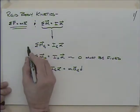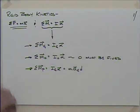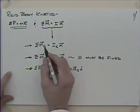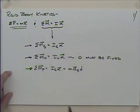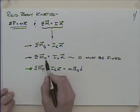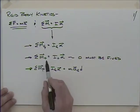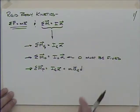We actually have three equations we can use. If you sum the moment about the mass center G, the sum of moments about G equals I about that same mass center times the angular acceleration alpha. Or if you want to sum the moment about a point other than the mass center, you could say the moment about point O equals I about O times alpha — with the restriction that O must be fixed, meaning not accelerating.